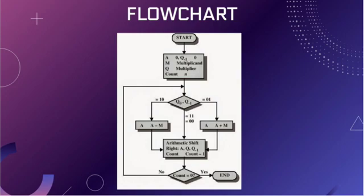There is also a counter which represents the number of bits in the multiplier or multiplicand. Next we check conditions on Q0 and Q-1. If the value of Q0 and Q-1 is 1-1 or 0-0, we perform an arithmetic right shift and decrement the count by 1.